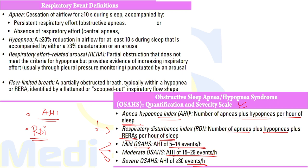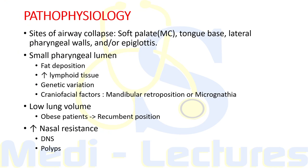Regarding pathophysiology: during inspiration, intraluminal pharyngeal pressure becomes increasingly negative, creating a suctioning force. Since the pharyngeal airway has no fixed bone or cartilage, airway patency is dependent on the stabilizing influence of the pharyngeal dilator muscles. These muscles are continuously activated during wakefulness, but neuromuscular output declines with sleep onset. In patients with a collapsible airway, this reduction results in transient episodes of pharyngeal collapse — manifesting as apnea — or near-collapse — manifesting as hypopnea.